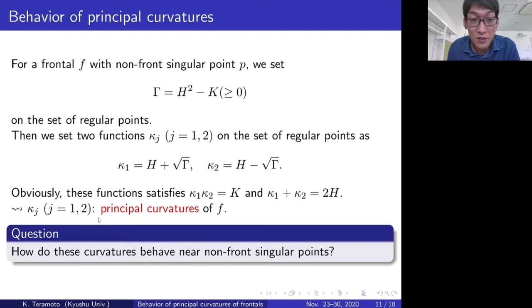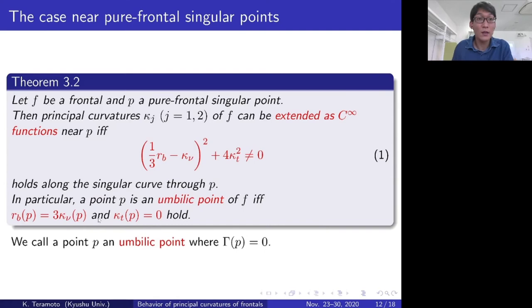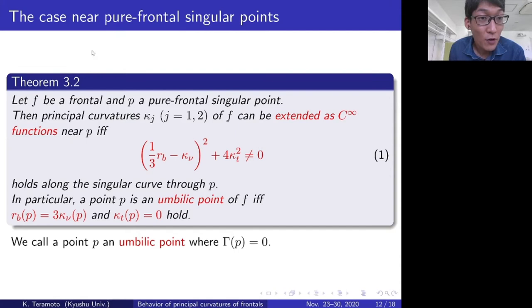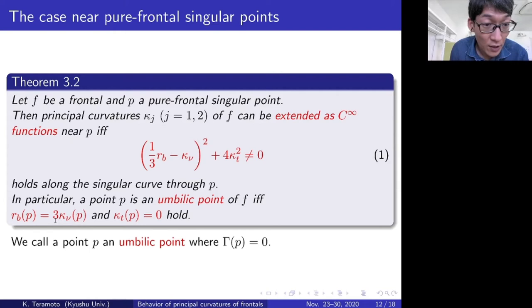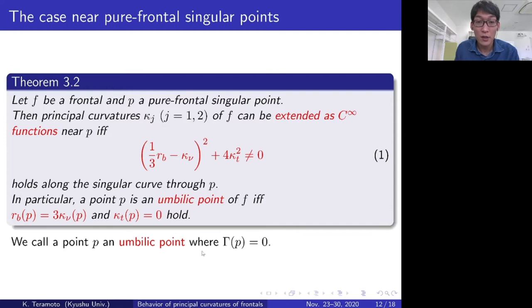Now we consider the behavior of these functions near a non-front singular point. First, we consider the case near a pure frontal singular point. In such case, we have the following assertion: let f be a frontal and p a pure frontal singular point. Then the principal curvatures κ₁ and κ₂ of f can be extended as C-infinity functions near p if and only if a certain relation holds along the singular curve. In particular, a point p is an umbilical point if and only if r_v equals 3·κ₂ and κ₂ equals 0 at p. Here, we call p an umbilical point if Γ(p) vanishes.